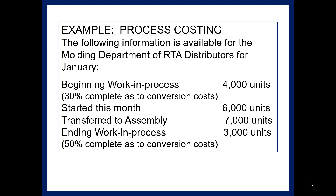Transferred to assembly: 7,000 units. Ending work in process: 3,000 units. So here we have the Molding Department that worked on some inventory and completed some of it that they transferred to the next department, which is apparently the Assembly Department.